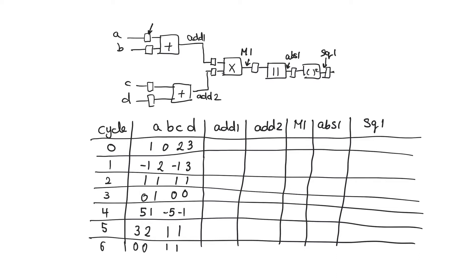We represent registers as these small squares, and we have five combinational circuits. These are two adders, a multiplier, an absolute circuit that takes the absolute value of its input, and a square circuit that takes the square value of its input.